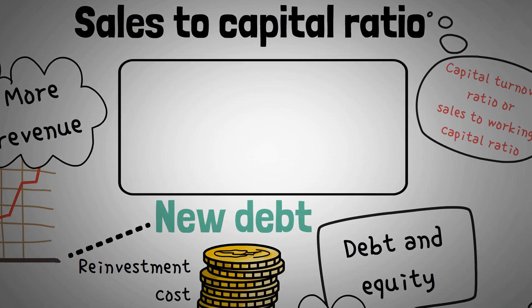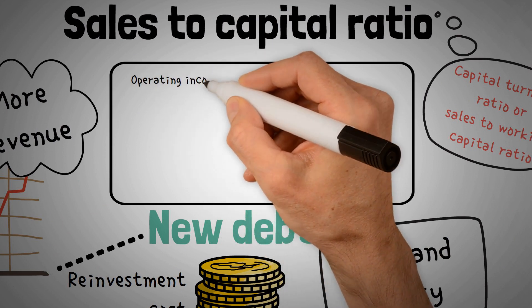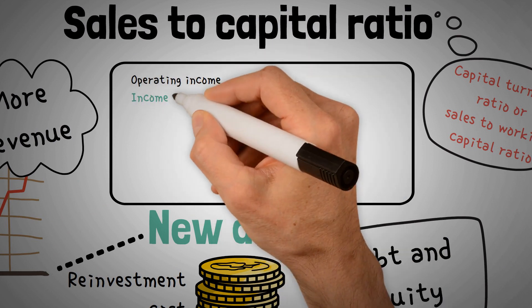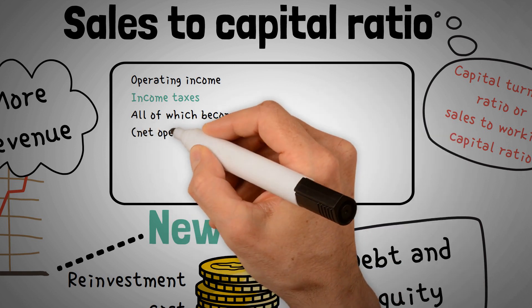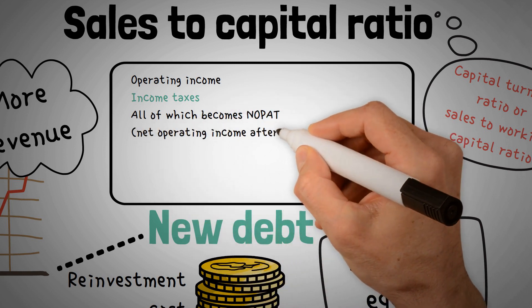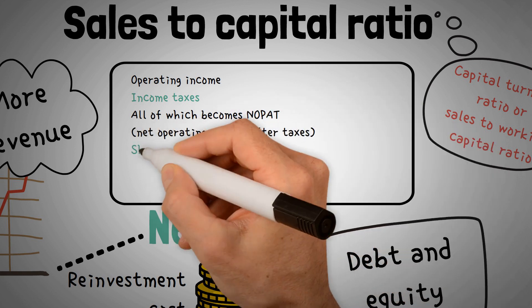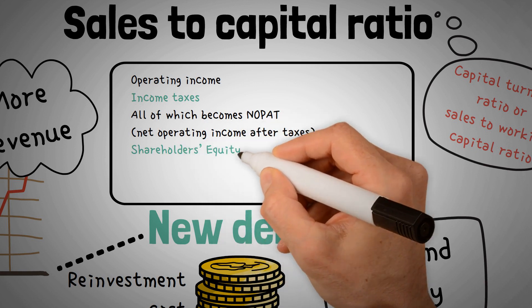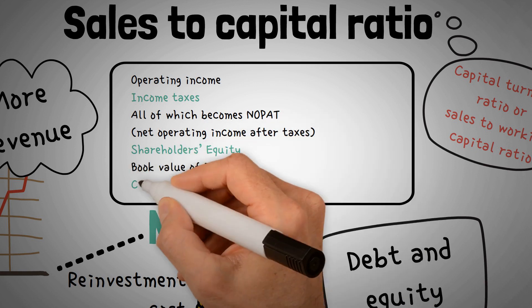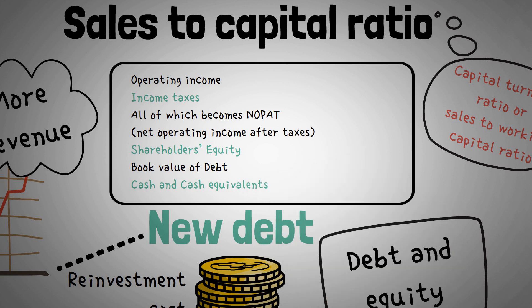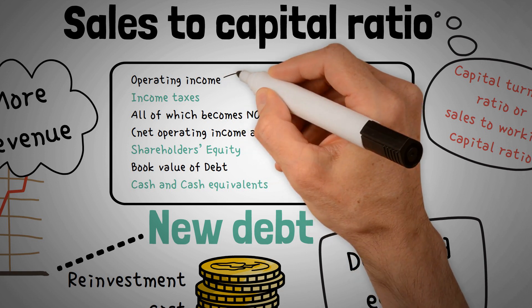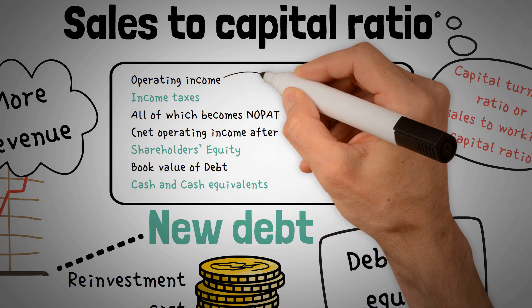To calculate the Return on Invested Capital, we need a few inputs: operating income, income taxes — all of which become NOPAT or net operating income after taxes — shareholders' equity, book value of debt, and cash and cash equivalents. For example, the ROIC for Verizon for the year ending 2020, taking the numbers from the latest 10K.